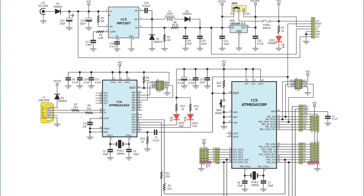Looking at IC3's pins: we have IN (input voltage) at pin 2, and we also have Enable, Compensation, SS, and G/D which means ground, along with other signals on this IC.